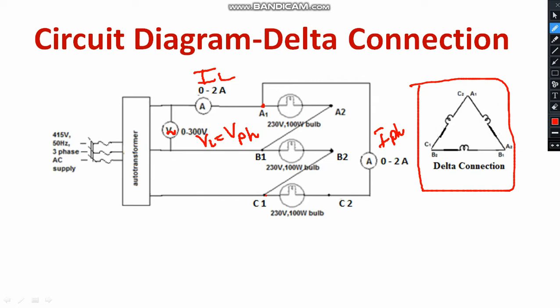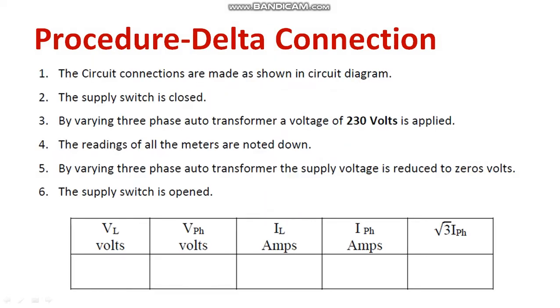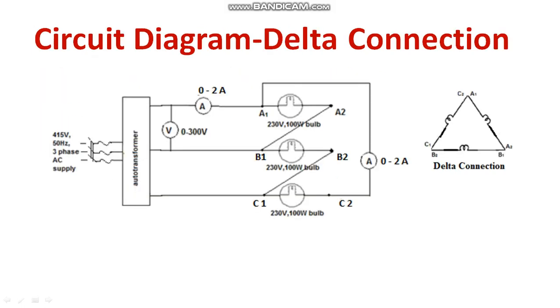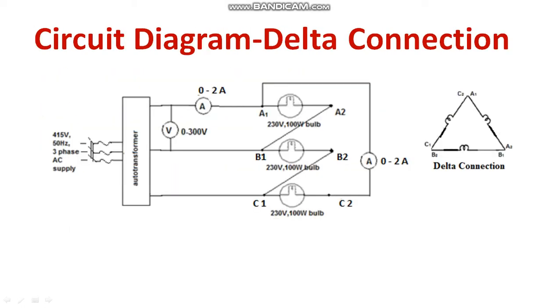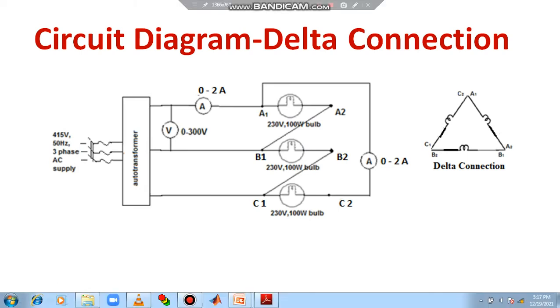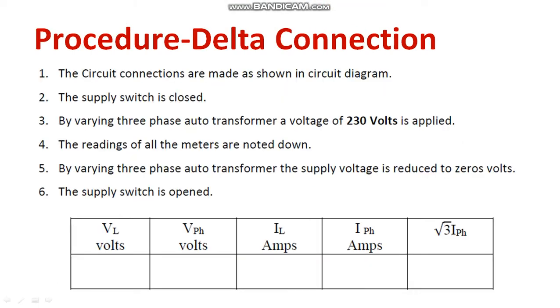Delta connection is used for high current and low voltage applications. The procedure is as follows: circuit connections are made as per the circuit diagram and the supply switch is closed — TPST, which means triple pole single throw switch. Then by varying the three phase auto transformer you need to apply a low voltage, say 230 or 200.